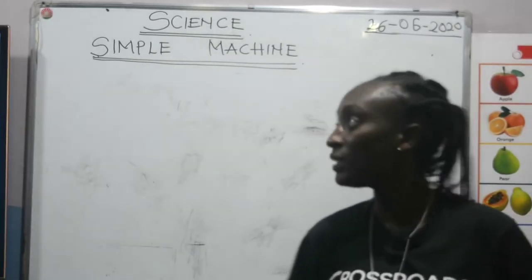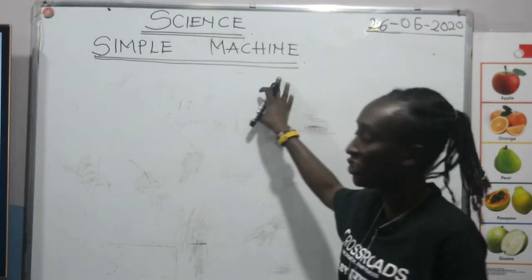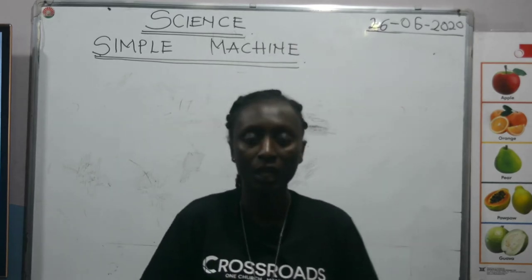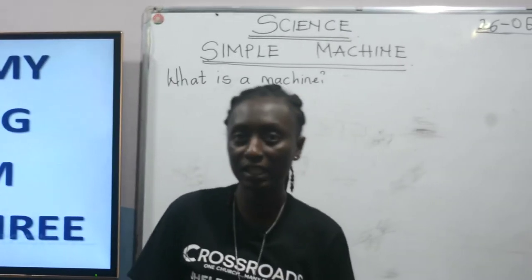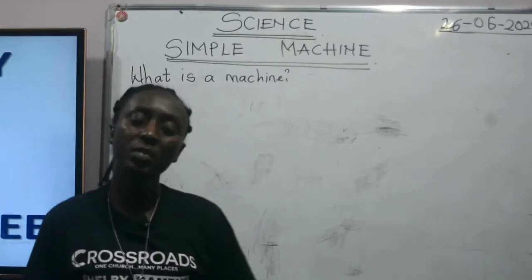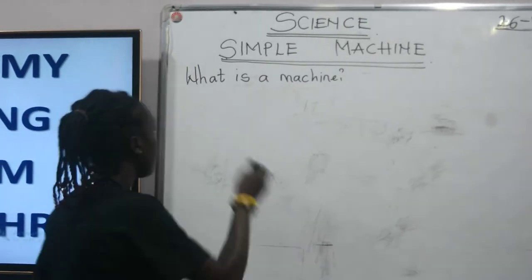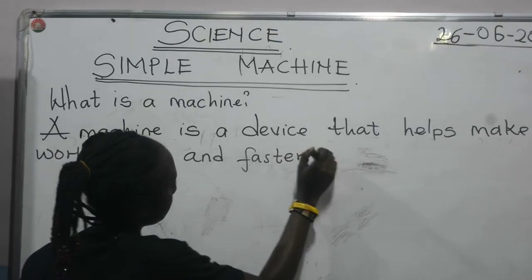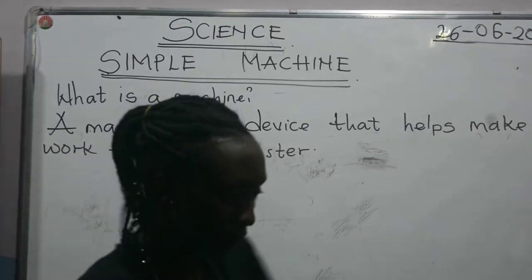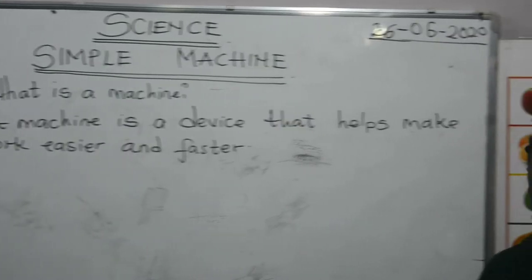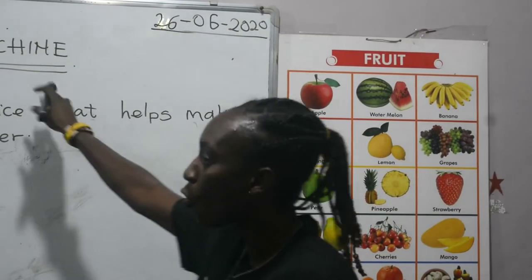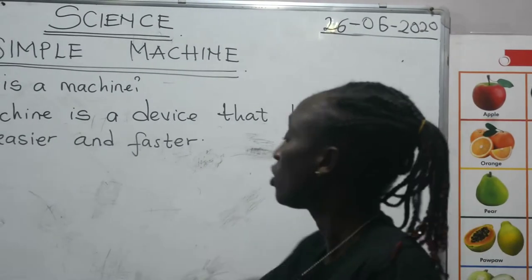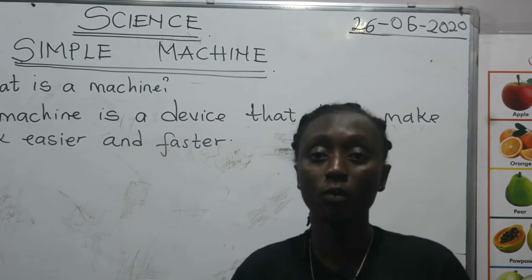Before that, let us explain a little about a machine. When we say a machine, what is a machine? A machine is a device that helps make work easier and faster. But today we are going to deal with a simple machine. So a simple machine is a machine that we use to make our work easy.